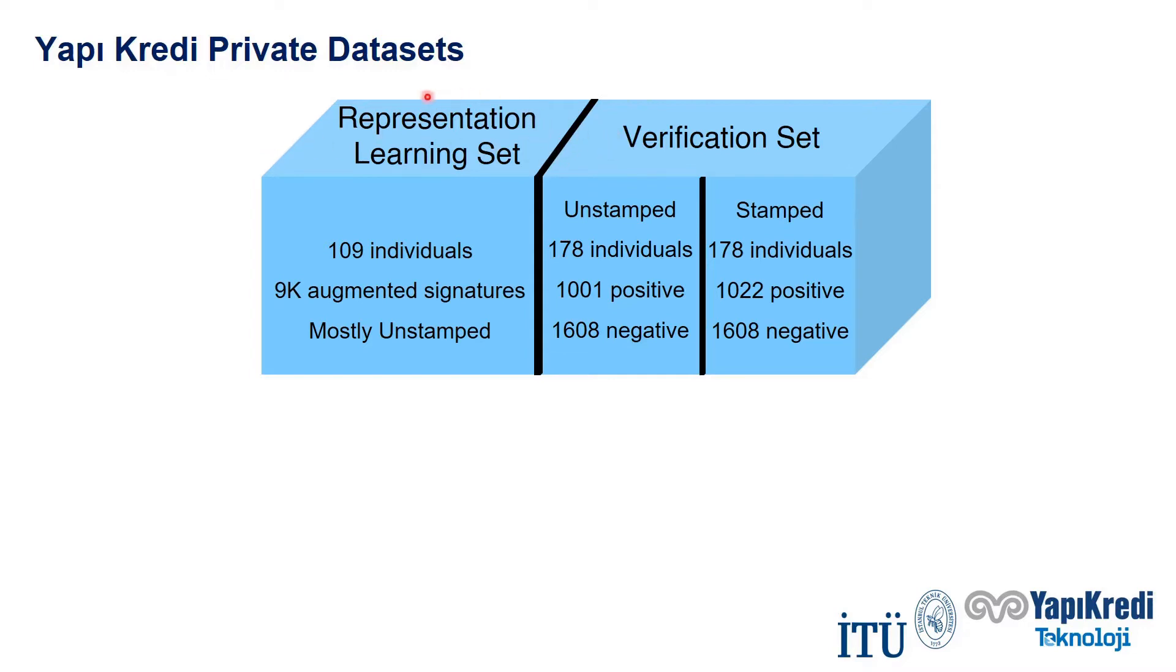In the representation learning set, we train our writer-independent models. In the verification set, we make our experiments. Individuals are completely different between these two sets.